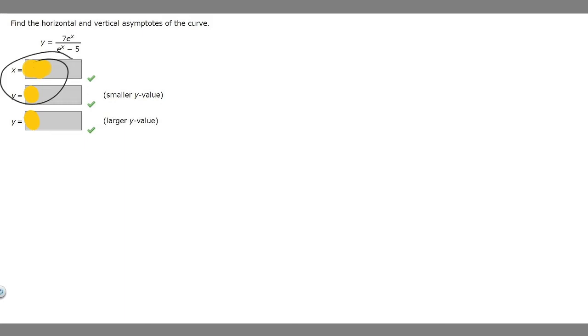So let's start by finding what x equals, which is basically our vertical asymptote. We find that by taking our denominator, which is e to the x minus 5, and setting it equal to 0. So if we add 5 to both sides, e to the x is going to be equal to 5.